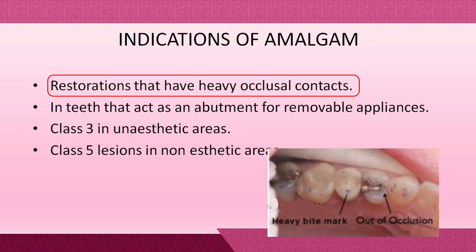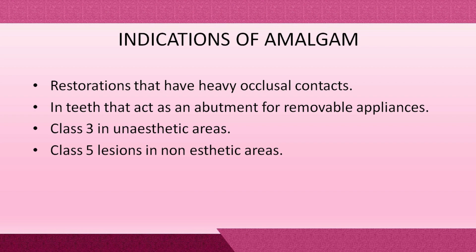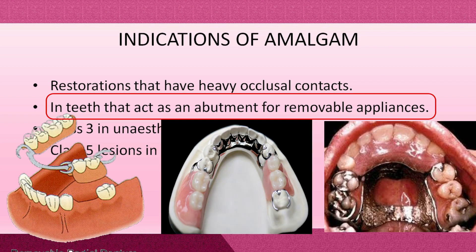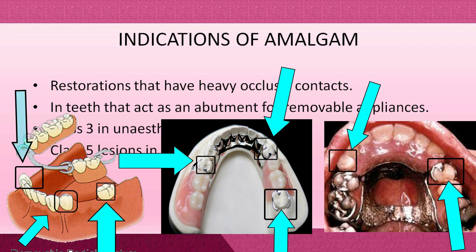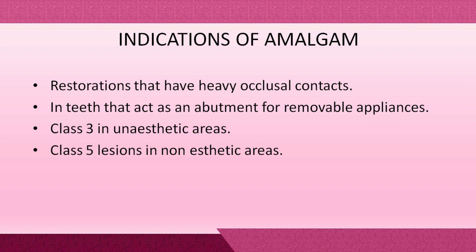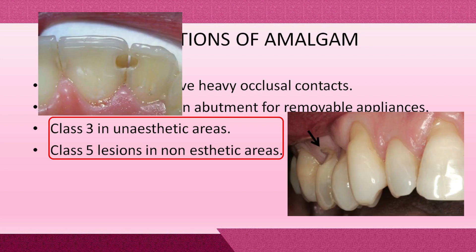Dental amalgam can be used in carious areas having heavy occlusal load because it has good compressive strength to withstand that load. Dental amalgam can also be used as an abutment in a removable partial denture; an abutment is a tooth providing support to the prosthesis.